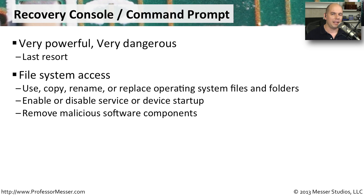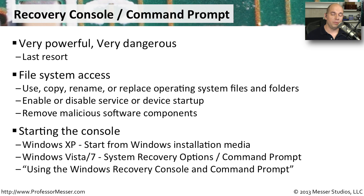You can also go to this command prompt to remove those components from your system itself. If you happen to know exactly where those files are, you can modify them and remove them right from the command prompt. To get to this console view in Windows XP, you would start from your Windows installation media. In Windows Vista or Windows 7, you can go to the system recovery options and command prompt from a repair disk or from the Windows installation media itself. I have an entire video that steps you through the process — you can find it under using the Windows recovery console and command prompt.